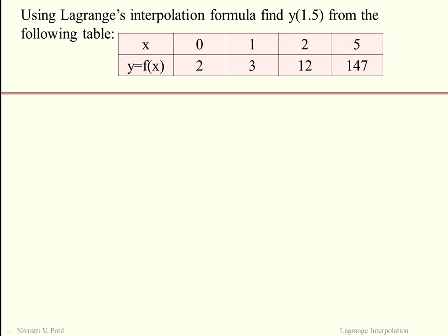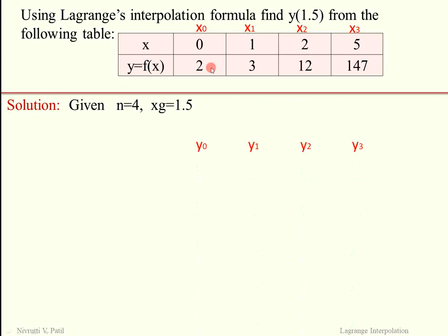First of all, we write the given data. N is equal to 4, where N is the number of data points. XG is the value of X at which we have to find Y, so XG is given as 1.5. For the tabulated values, we write the notation for X values as X0, X1, X2, and X3, and for Y values as Y0, Y1, Y2, and Y3.